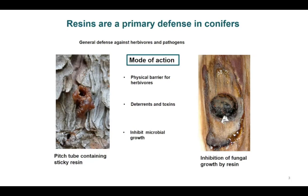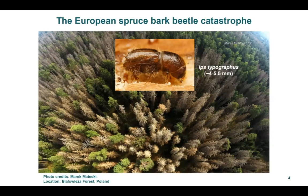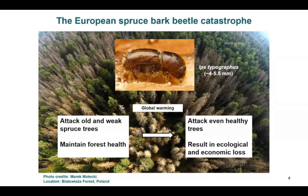The spruce forests in Europe are dying at an unexpected rate in the last few years. The reason for this massive die-off is due to a tiny bark beetle called Ips typographus, native to Europe. Like many other bark beetles, it feeds on the nutritious phloem tissues underneath the bark and completes its whole life cycle in the same tissue. When the beetle population is low, bark beetles usually prefer old and stressed trees and help maintain the health of the forest. In the last few years, bark beetles have become a serious problem mainly due to global warming, resulting in prolonged drought and mild winters. When the beetle population reaches above a certain threshold, bark beetles attack not only stressed trees but also healthy trees, resulting in huge ecological and economic loss.